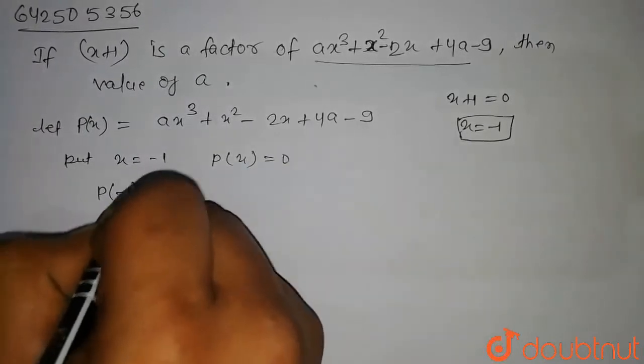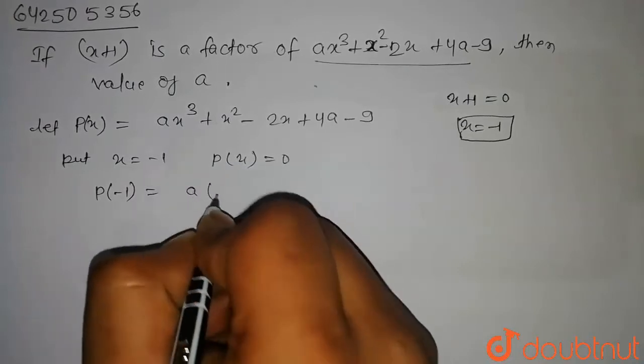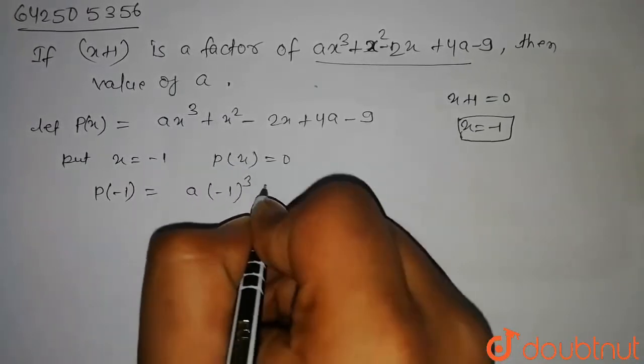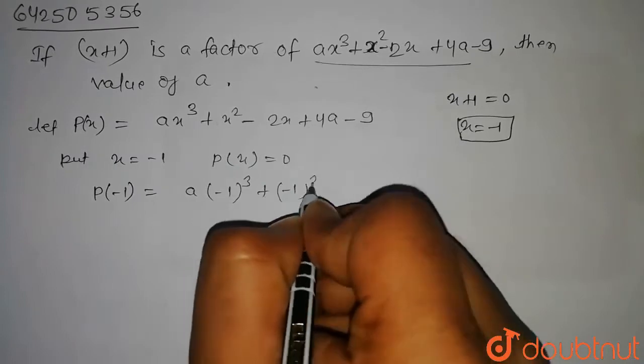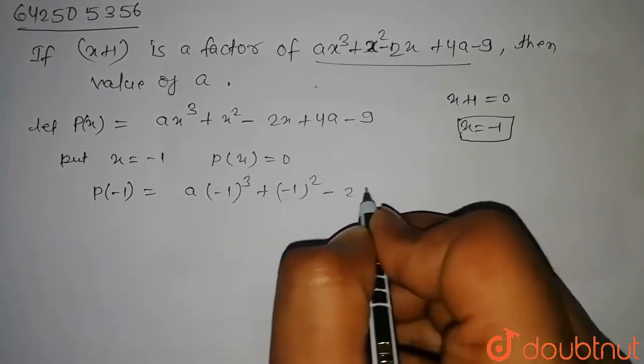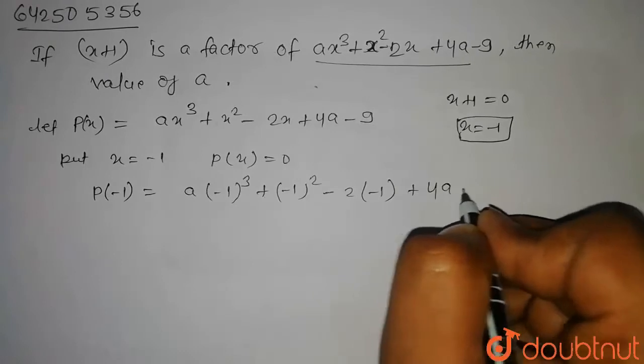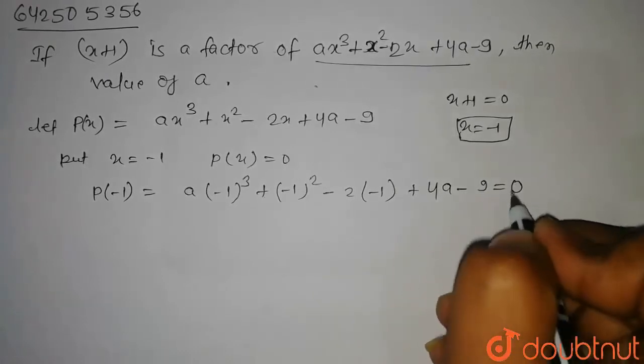So P of minus 1 will be equal to a into minus 1 to the power 3 plus minus 1 to the power 2 minus 2 into minus 1 plus 4 into a minus 9 will be equal to 0.